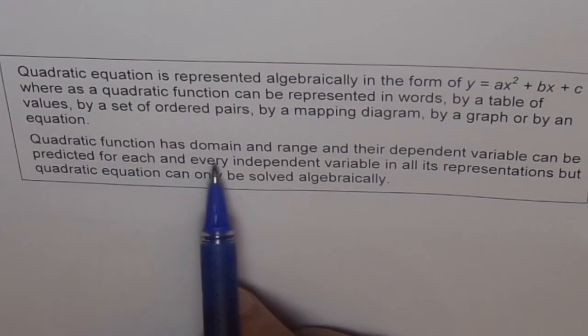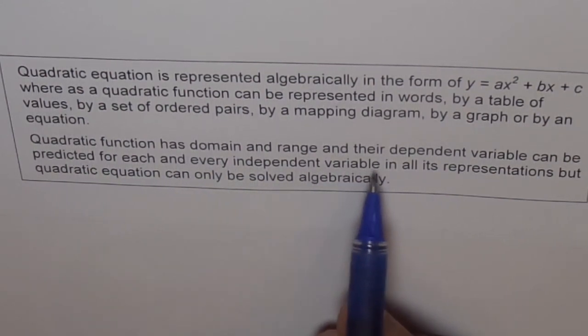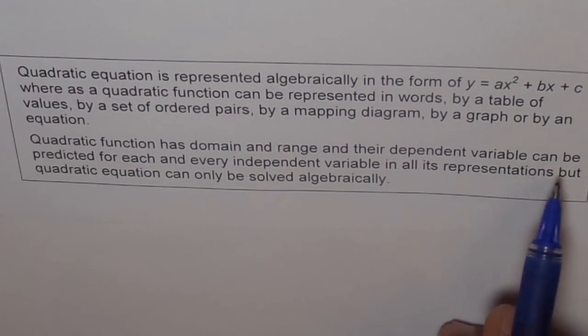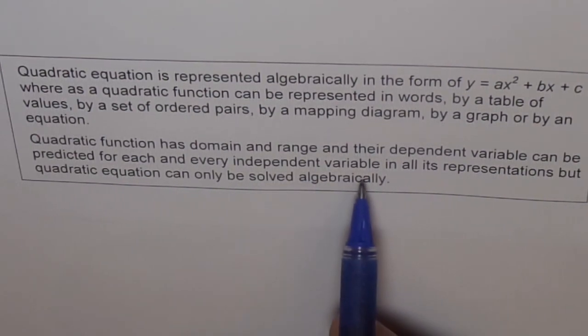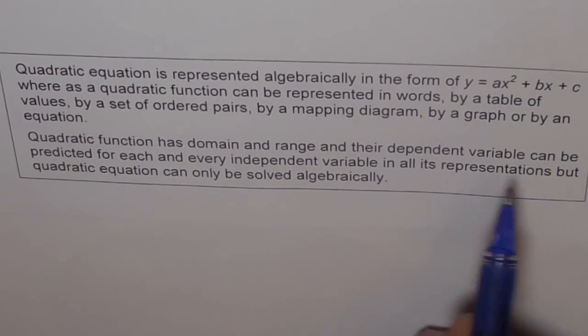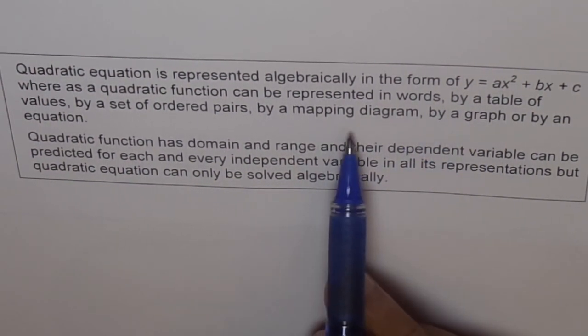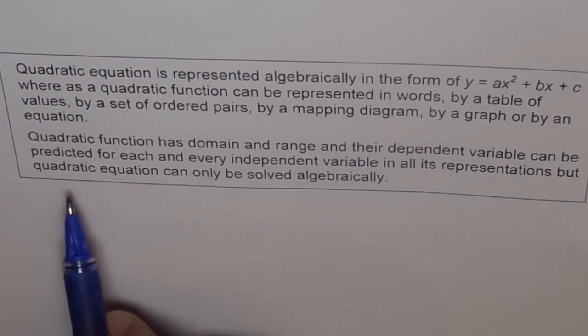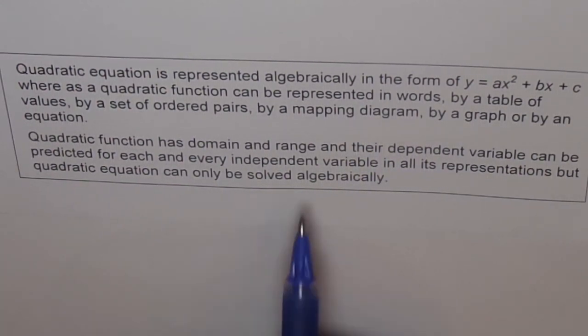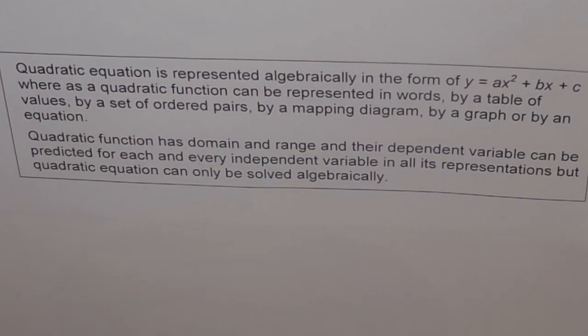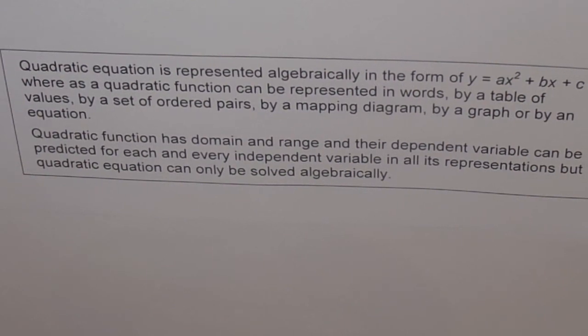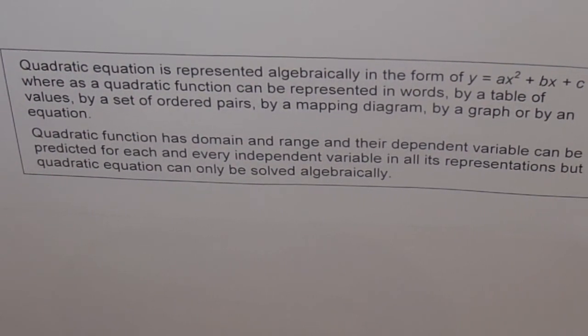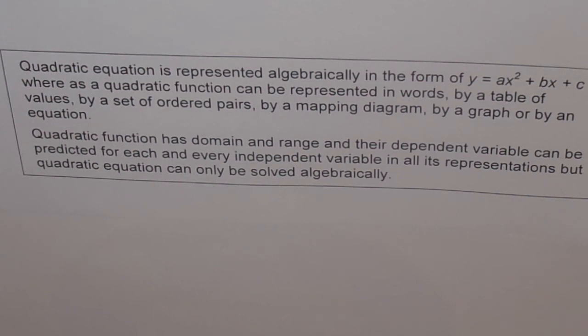And quadratic function has domain and range and their dependent variable can be predicted for each and every independent variable in all its representations, whether it is in words, tables, graphs or mapping diagrams. But quadratic equation can only be solved algebraically. That's kind of a very important distinction between quadratic equation and quadratic function. I hope you remember and appreciate it for all times to come. Okay, thank you.